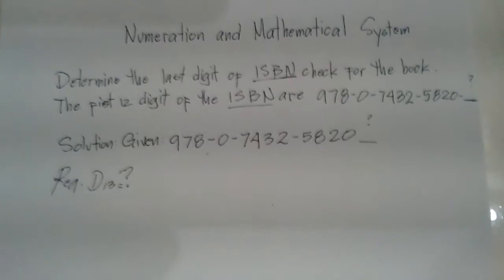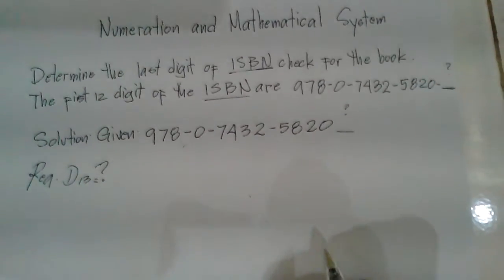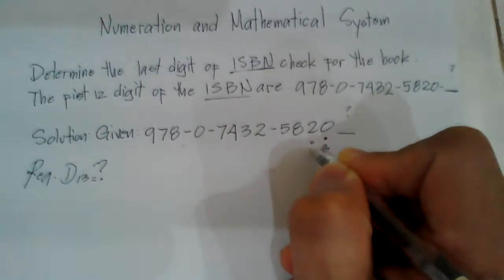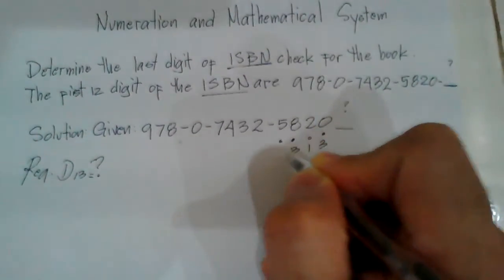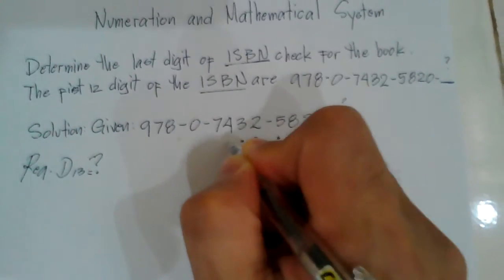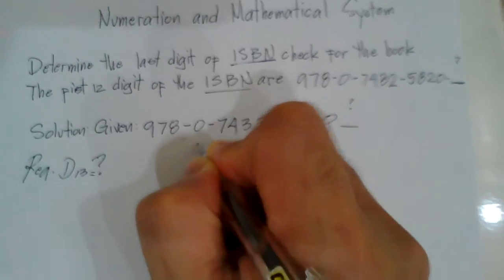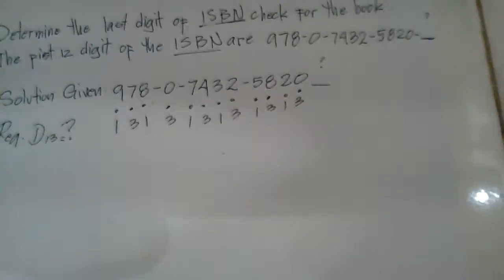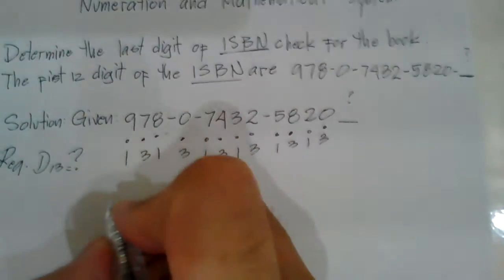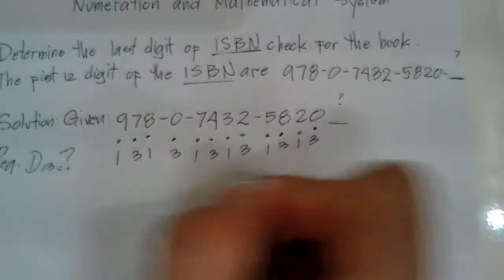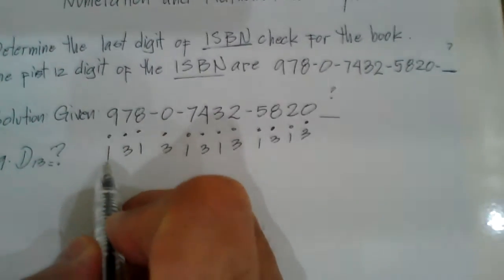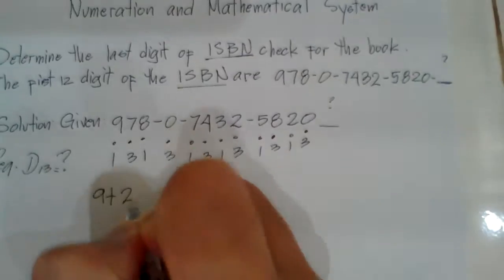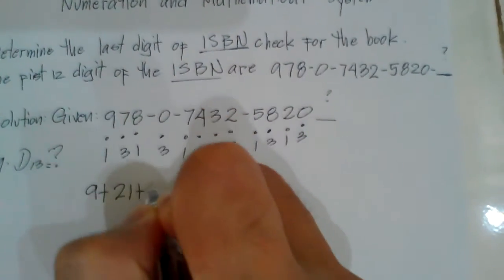All we have to do is multiply alternate digits by 3, so the pattern is: times 3, times 1, times 3, times 1, and so on — alternating through all 12 digits of the ISBN before the check digit.